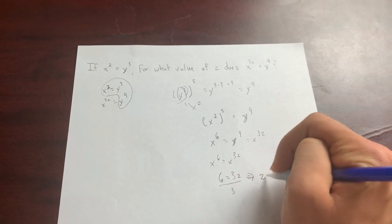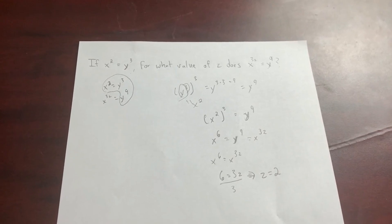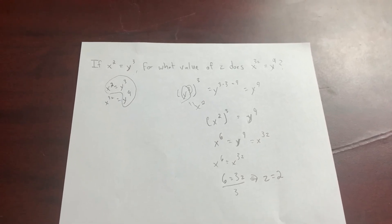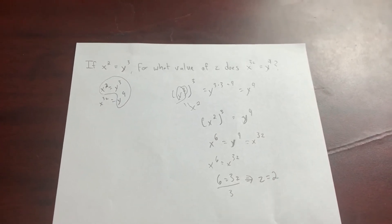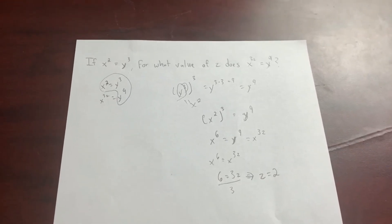So z equals 2. And what people may do at this point is they're going to leave the problem and go on. You can do that, but that's not good practice. Good practice is self-checking to make sure this answer is correct. Really quickly, this takes like 2 seconds.